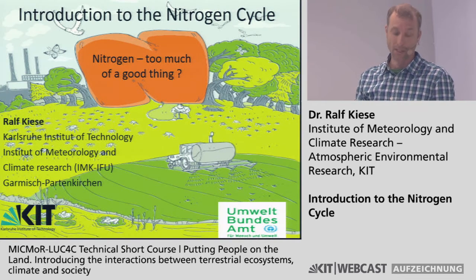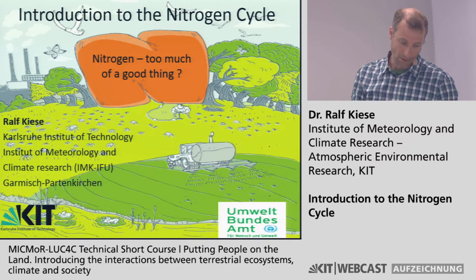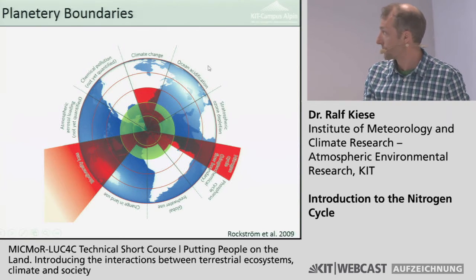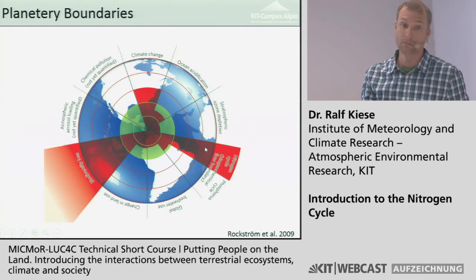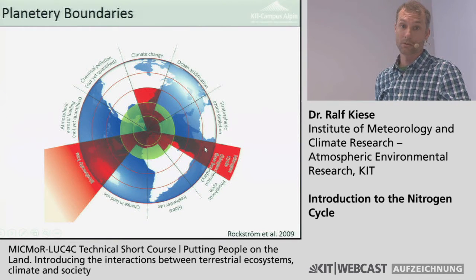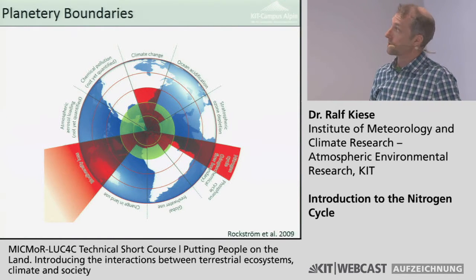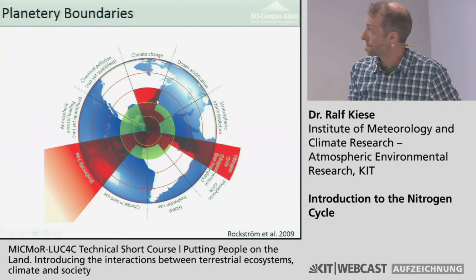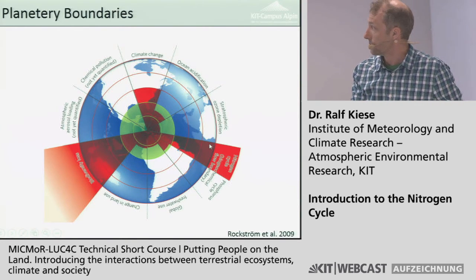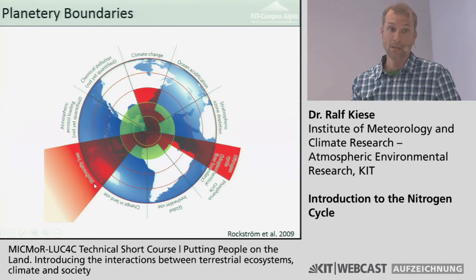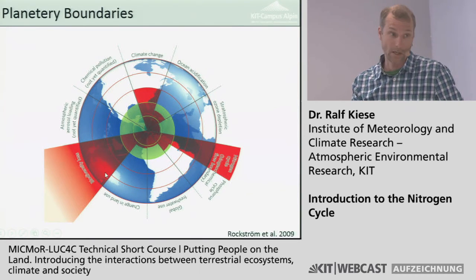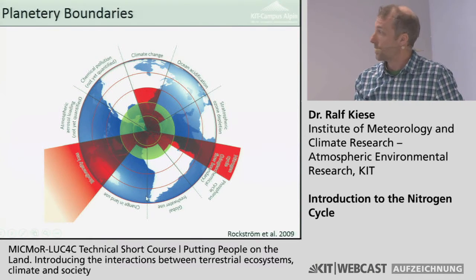If you look at a publication by Rockström et al. published in Nature 2009, nitrogen was identified as one of the most important threats to the earth at the moment under the keyword of planetary boundaries. There is climate change, but nitrogen perturbation is seen as even more important, along with biodiversity losses. We will see later that nitrogen is also linked to climate change and to biodiversity — they are all linked.